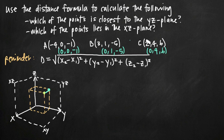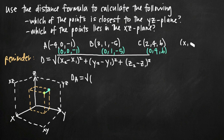We just take that x value and make it 0. So the closest point on the yz-plane to point B (3, 1, -5) would be (0, 1, -5), and to point A (-4, 0, -1) would be (0, 0, -1). Now we have pairs of points between which we can calculate distance using our distance formula, treating the original points as (x₁, y₁, z₁) and the yz-plane points as (x₂, y₂, z₂).